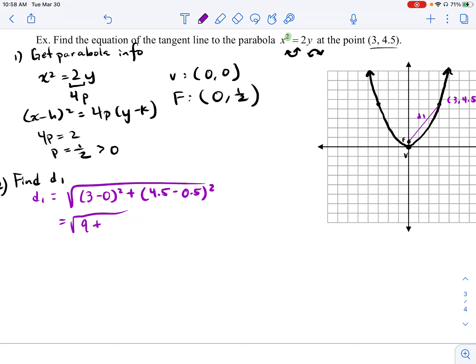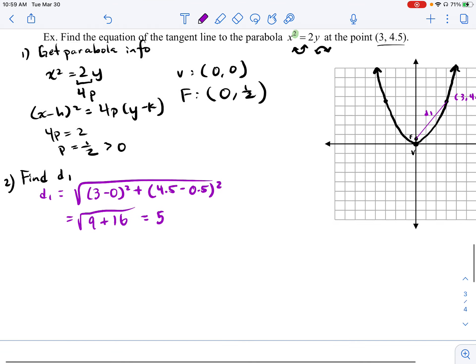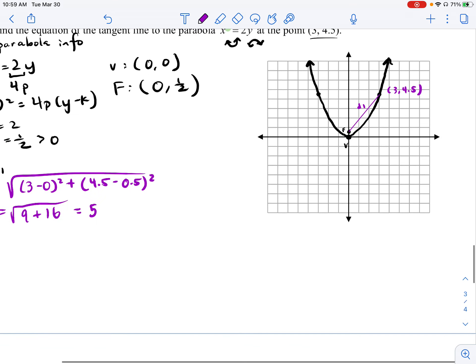And that's going to give me, 3 squared which is 9, 4.5 minus half is 4 squared which is 16, the square root of 25 is just 5. So there's my D1. So this is a nice clean integer. What that means now is that right around here.